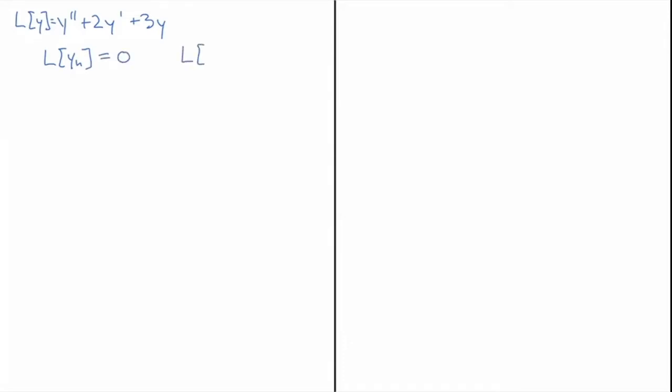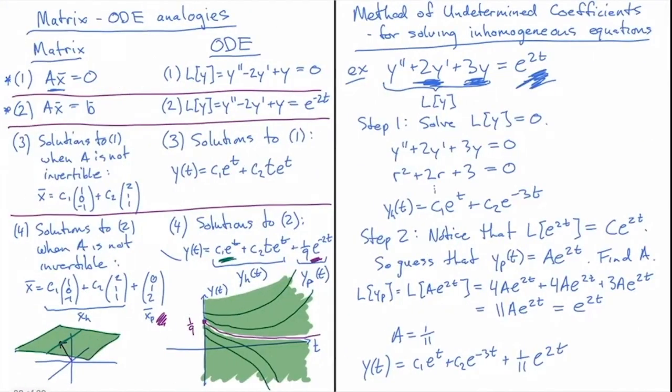And if I plug into L my solution 1/11 · e^(2t), we found what came out of that. We found that e^(2t) came out of it, because the operator basically puts an 11 factor in front of the exponential e^(2t). So because of linearity, we know that L(yh + 1/11 · e^(2t)) = L(yh) + L(1/11 · e^(2t)). Because of linearity. And L(yh) is just 0, and L(1/11 · e^(2t)) is e^(2t). So if we combine our two solutions—the homogeneous plus the particular that we got from the method of undetermined coefficients—we end up solving our differential equation. That's how we know that this is the correct assembled solution.